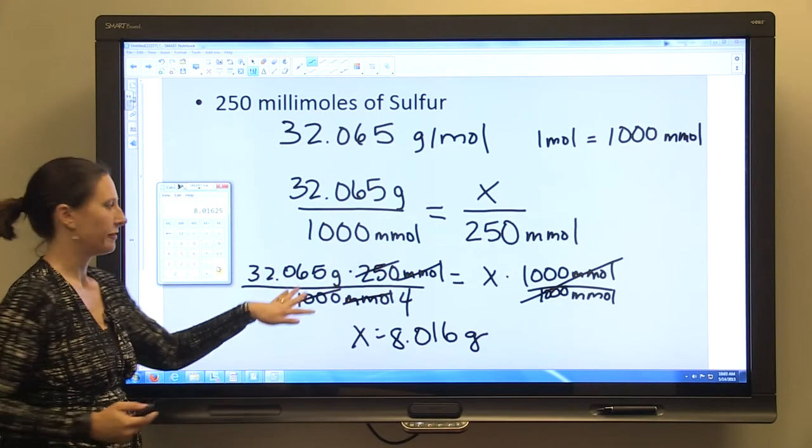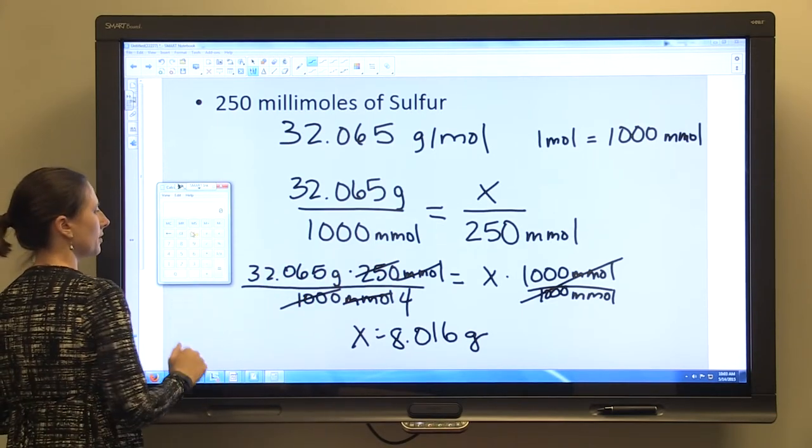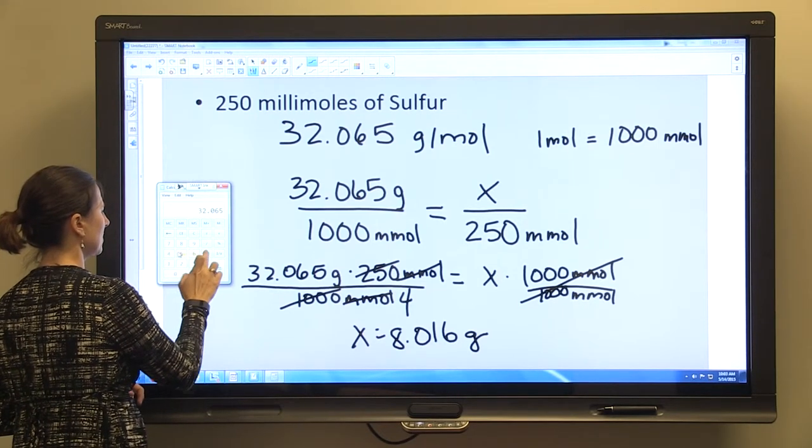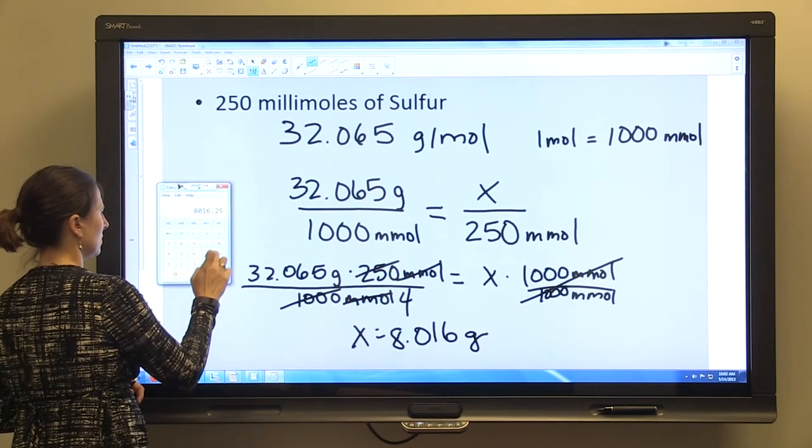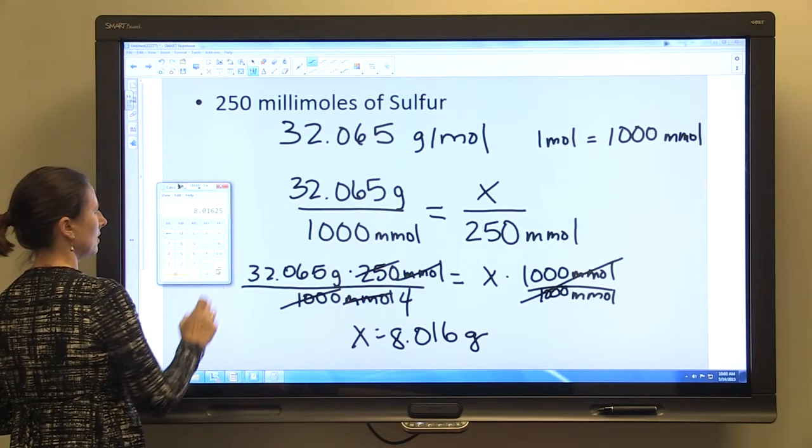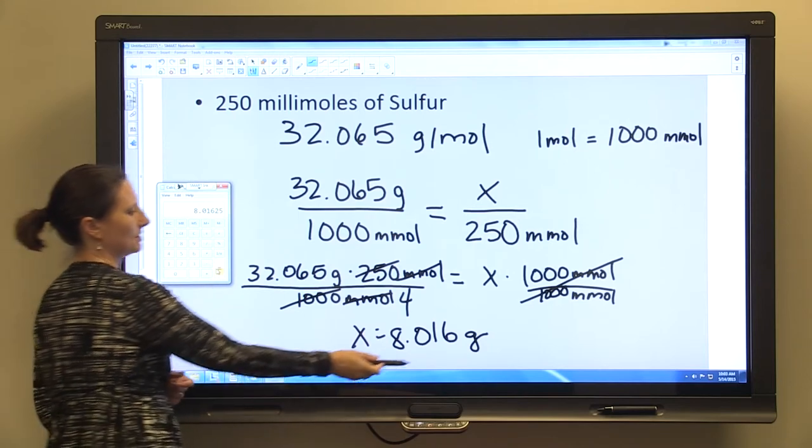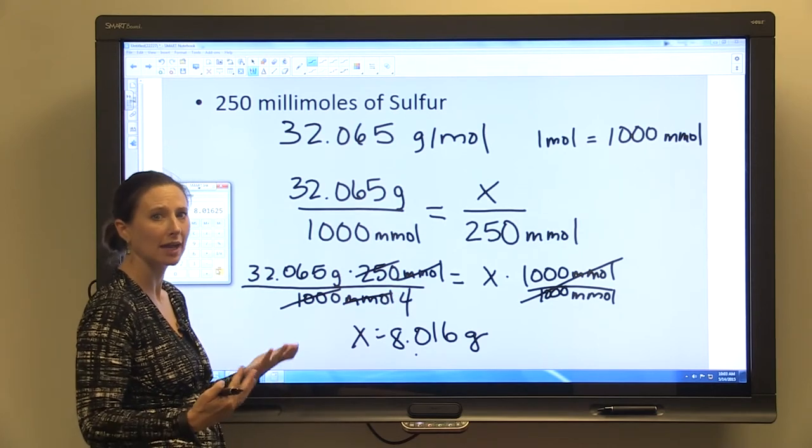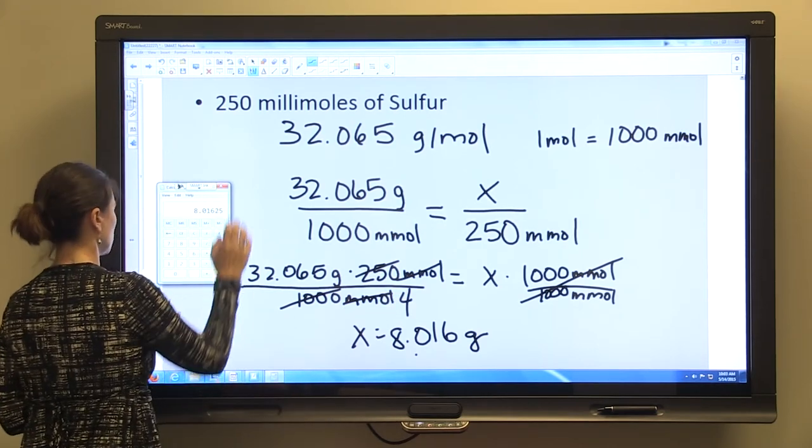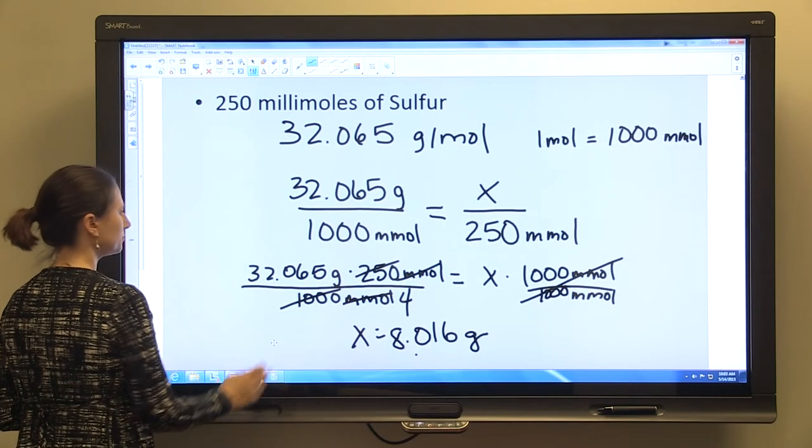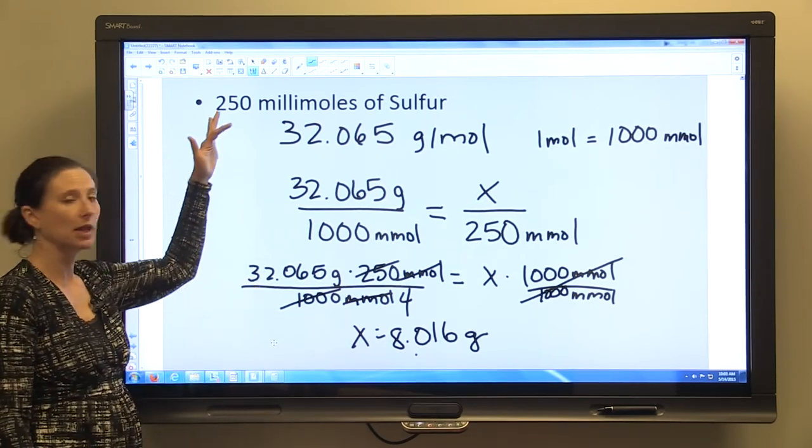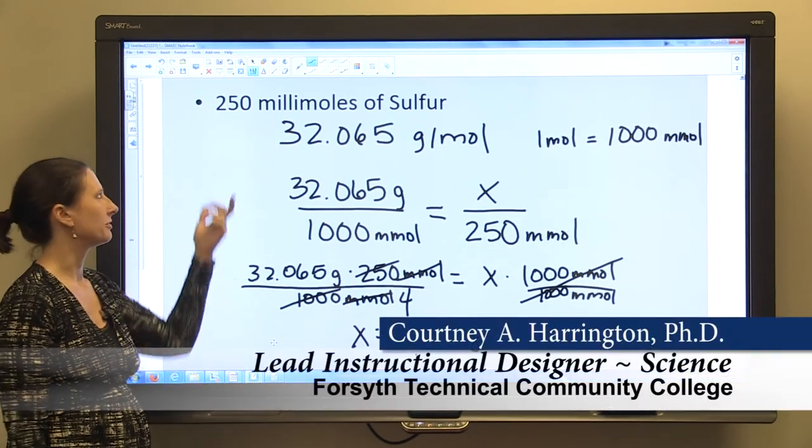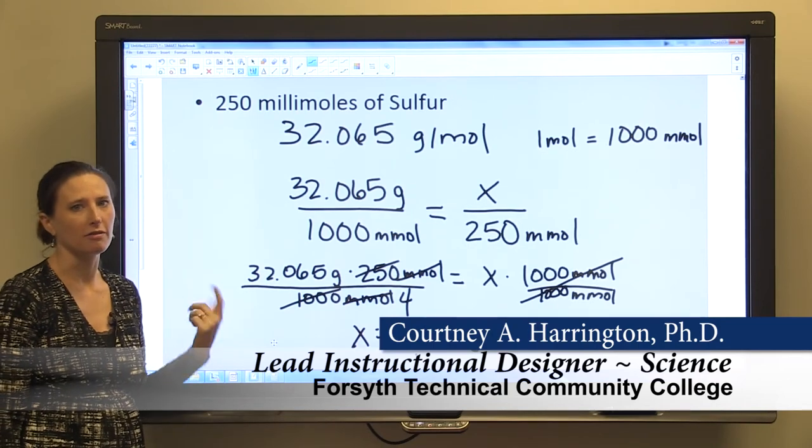Just want to show you that this simplification did have us come up with the same answer that we would come up with if we had just multiplied it out. So 32.065 times 250 divided by 1,000. And we do still get the same number. So if you don't want to simplify and risk simplifying incorrectly, you can just put it all into your calculator and make sure that you get it right. So that's an example of something a little more complicated than whole numbers where we have a different unit and a different number of moles of a single element.